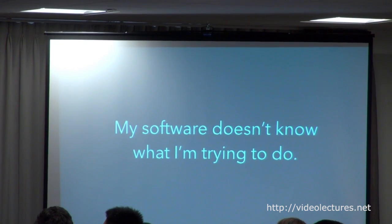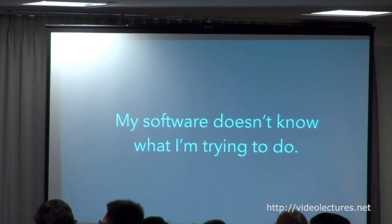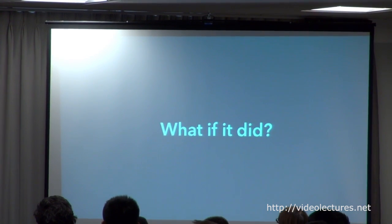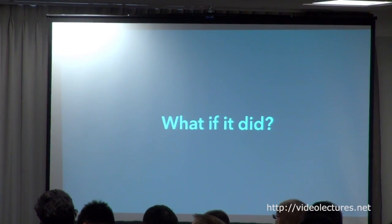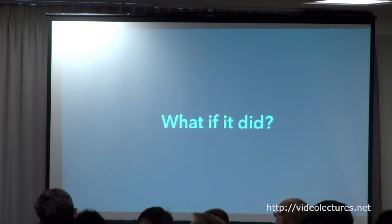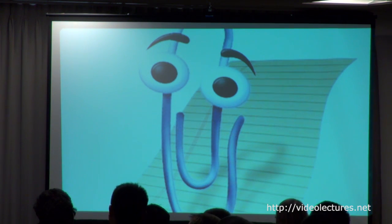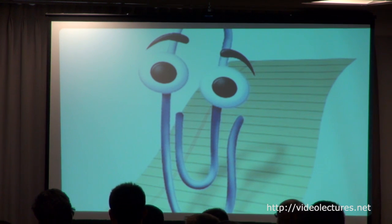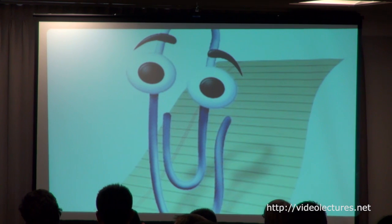The follow-on question is: what if it did? As many of you know, this is not a new question. You would be forgiven if you're already cringing in your seat thinking about examples where people have come up with systems that have some notional model of what you're trying to do and provide interactive assistance. It's obviously a very interesting question of how we effectively design in this space.